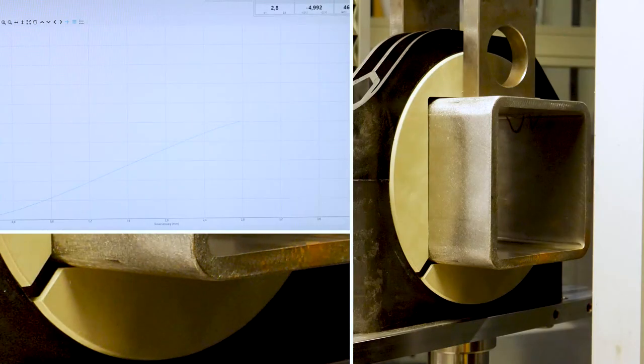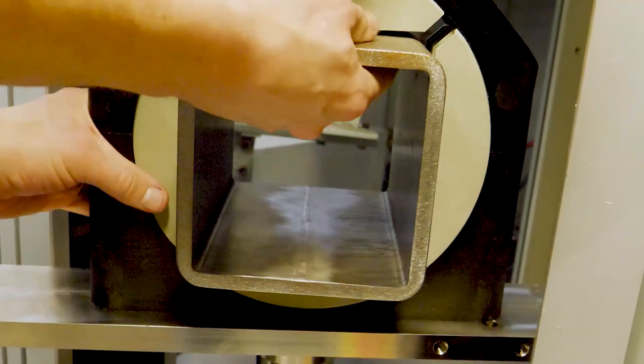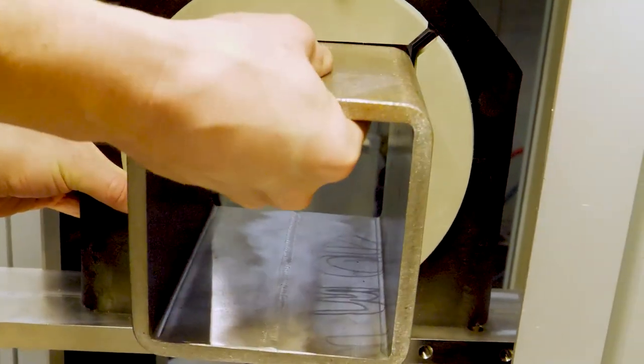In this orientation the part can resist a higher load than in the orientation we tested before. And the break looks a bit different. This time the rib inside the bearing has broken.